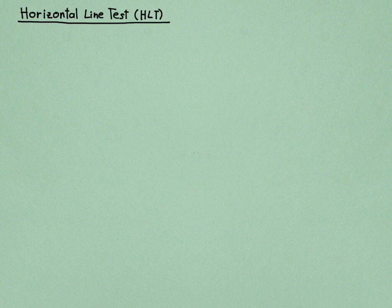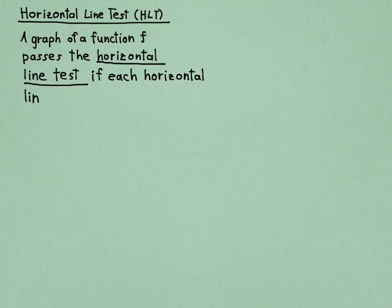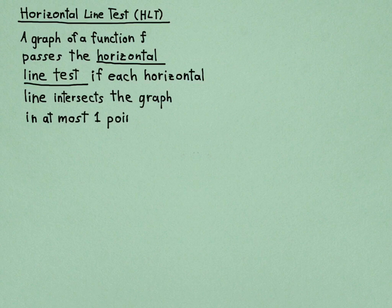The horizontal line test, or HLT, says a graph of a function f passes the horizontal line test if each horizontal line intersects the graph of f in at most one point.